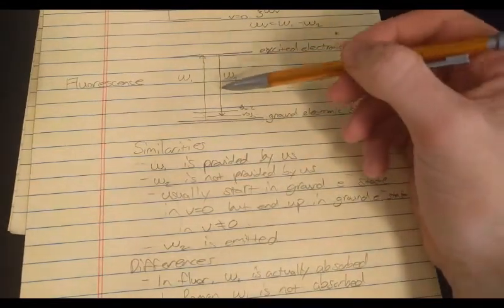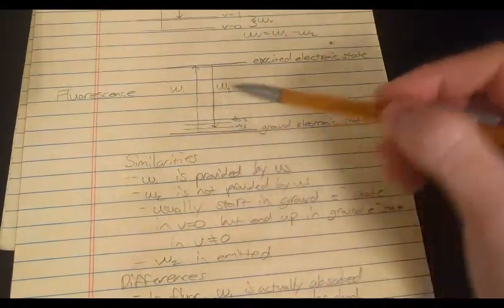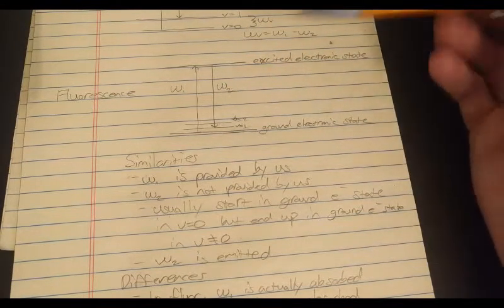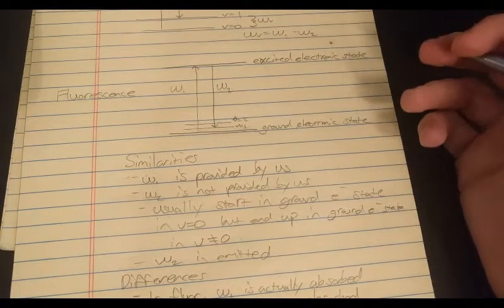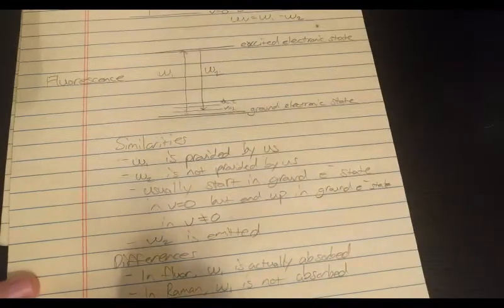Another thing is, I won't write this one down though. It's an experimental observation. Well, and you can explain it, but it's a little deeper than what I'm going to discuss here, but fluorescence usually gives you a lot wider bands than Raman does.